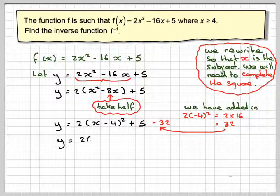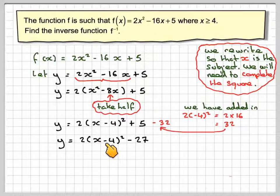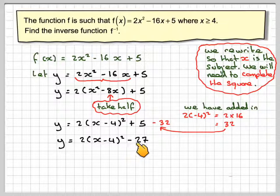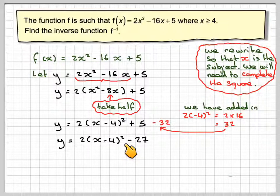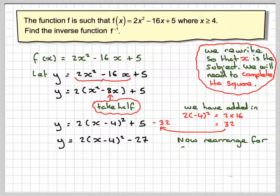We can now rewrite this as y = 2(x - 4)² - 27. We now need to make x the subject, having completed the square.